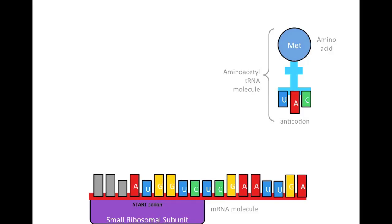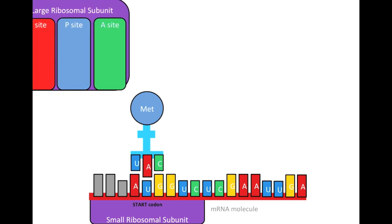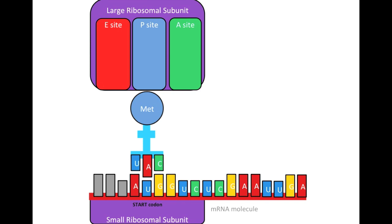Now back to the process of translation. The initiator tRNA will bind to the start codon, and following this binding, the large ribosomal subunit will join in, binding to the small ribosomal subunit and the mRNA molecule at the start codon.